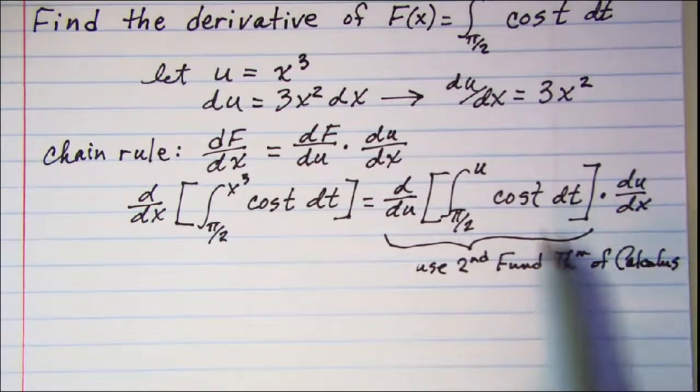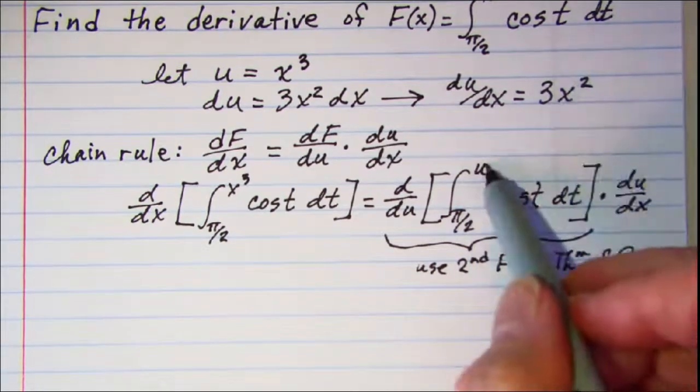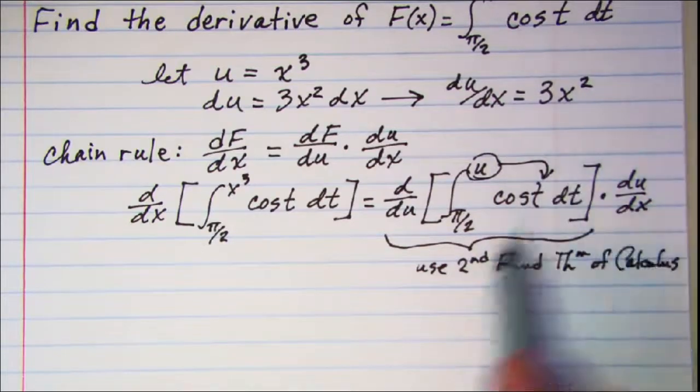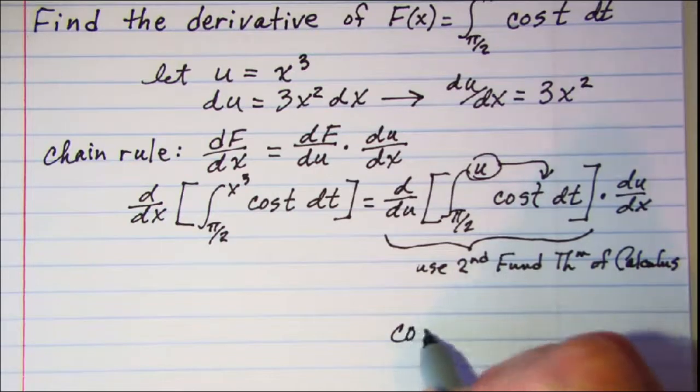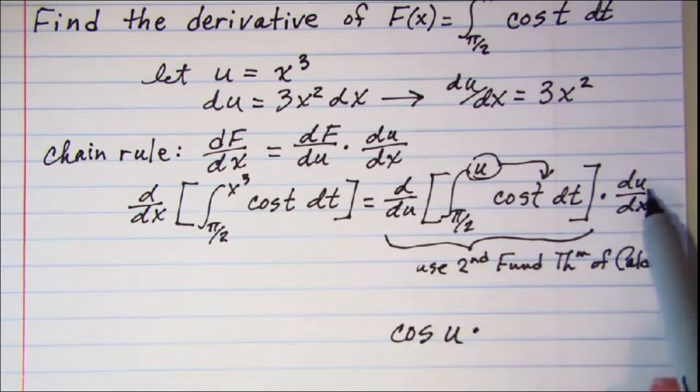We have the cosine of u because remember all we need to do is substitute in this variable. So this part of the problem is just cosine u and then multiplied by du dx.